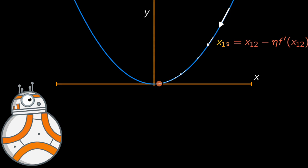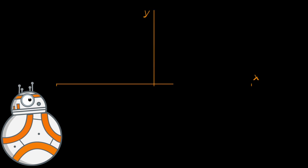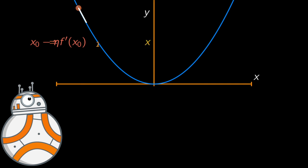Whether you start from the right or the left of the valley, this is exactly what gradient descent does. It measures the local gradient of the error function with regards to the parameter vector, which is x in this case, and it goes in the direction of descending gradient.